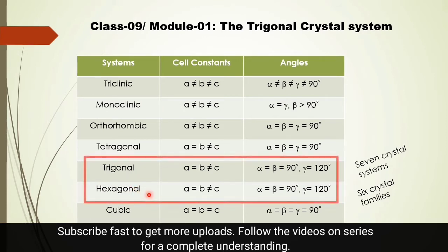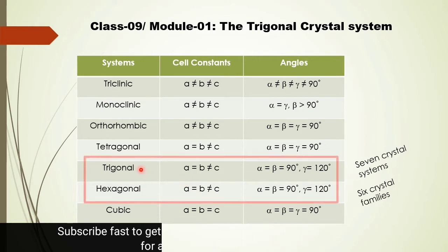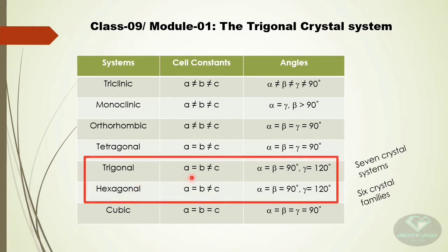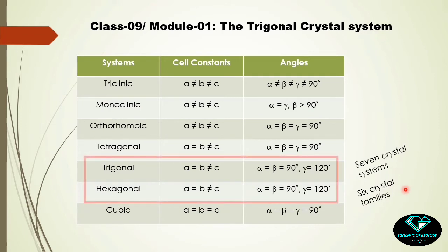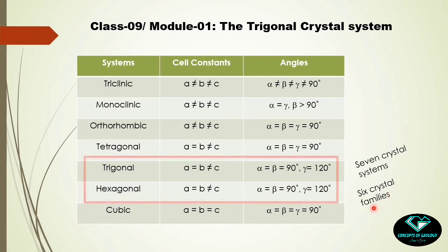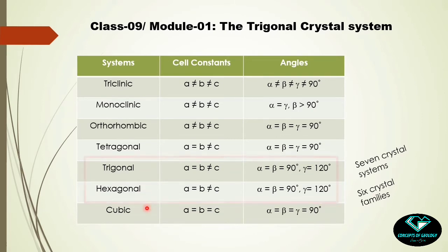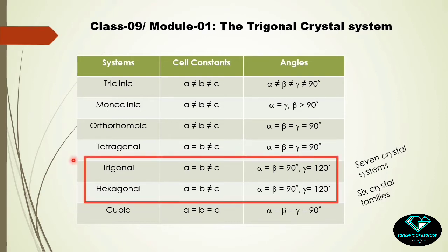Among these seven crystal systems, trigonal and hexagonal are having cell constants and angles that are just the same — they are copied from one another. This is happening because trigonal and hexagonal crystal systems belong to the same family. In fact, we have six crystal families but seven crystal systems. A definite question arises: why are they placed in a single crystal family while belonging to different crystal systems?